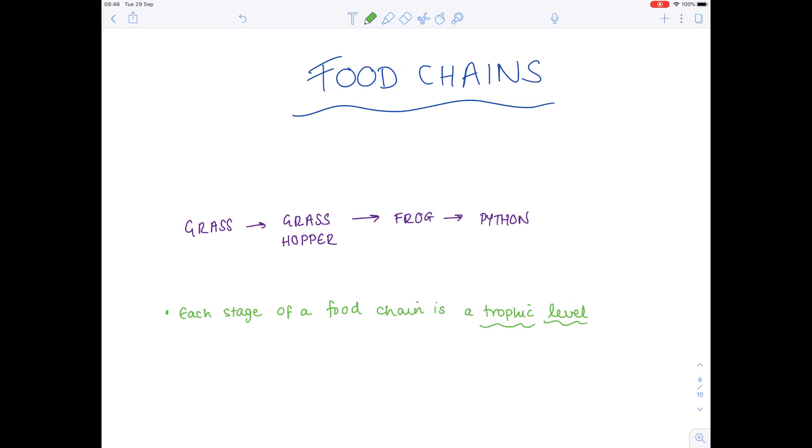Food chains tend to start with producers, which are typically plants that photosynthesize. Indeed, that is true in this case where the grass is the producer. Something which eats the grass is known as a consumer, and because the grasshopper is the first consumer, we call it the primary consumer.